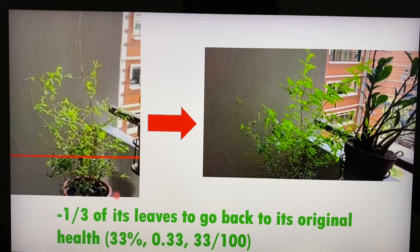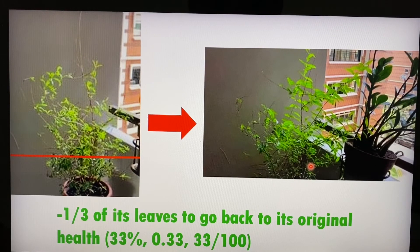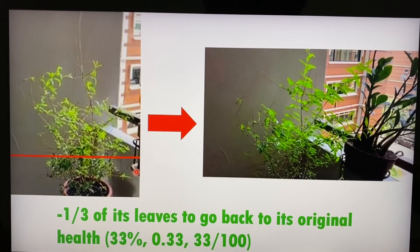Keeping in mind that only one-third of these leaves were left on my plant — my wife's plant — and yet with just one-third, or 33 percent, or 0.33 as a decimal, or 33 over 100 as a fraction, one-third of the leaves allowed it to grow back more leaves and almost go back to its original health, as seen in the picture on the right. According to my so-called accidental experiment or accidental encounter, it seems like one-third of the surviving leaves allowed the whole plant to go back to its original health.